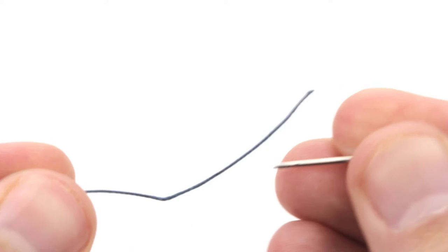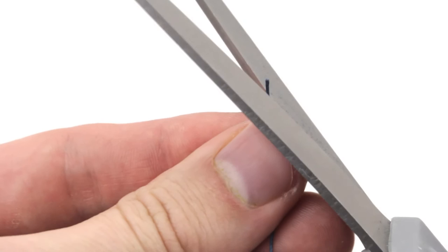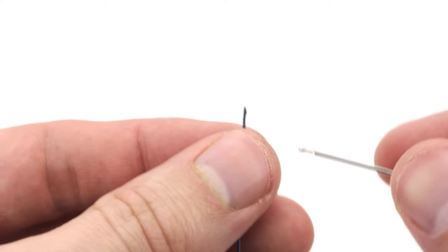So the first step in the bookbinder knot is to simply thread our needle. Now the first step that I usually do with threading is take a pair of scissors and cut the end of my thread into a nice sharp point, and that's going to make it a lot easier for me to thread my needle.